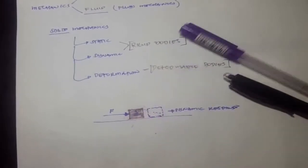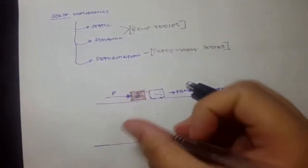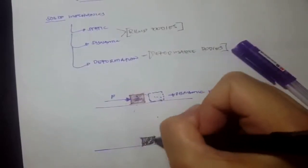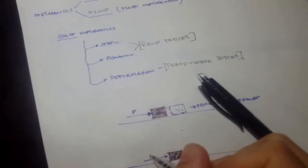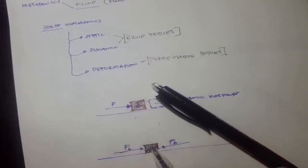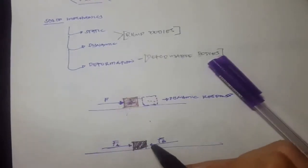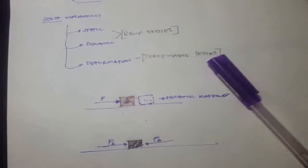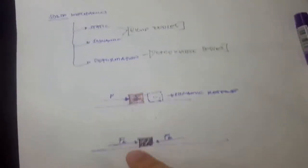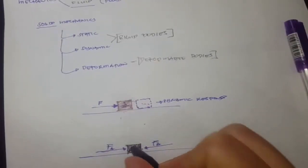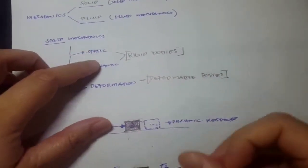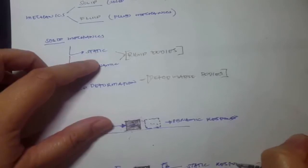Another example: consider another box with two forces acting upon it — force A and force B — where force A and force B have the same magnitude but opposite directions. The body remains in its initial state and does not move. Therefore, this is a static response.